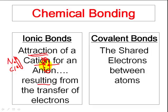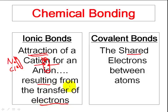The bond was the plus-minus attraction. Now, as we go over to covalent bonds, we're not going to see the word attraction anymore. We're simply going to see that the bond is nothing more than shared electrons. In ionic bonds, electrons caused the bond to happen, but they were not the bond. In covalent bonds, the shared electrons are the covalent bond.